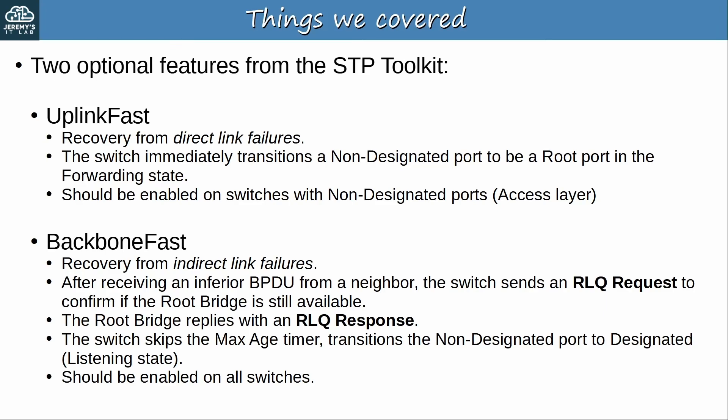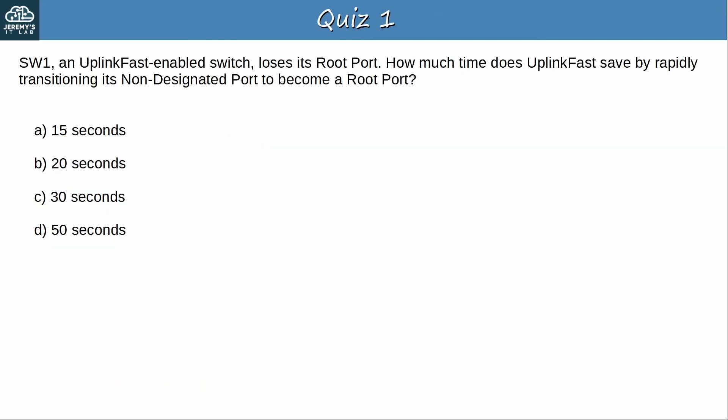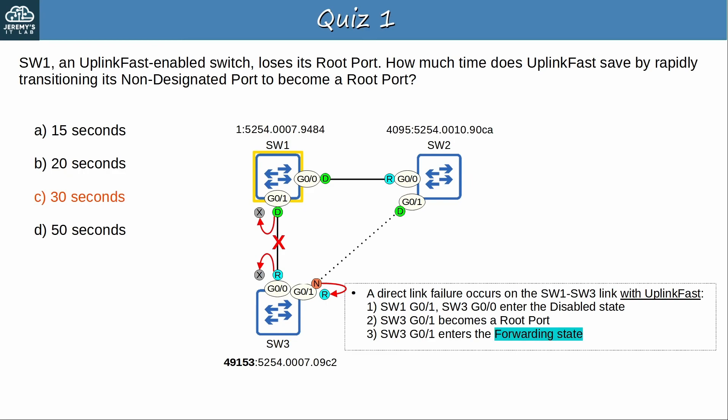Quiz question 1: Switch 1, an UplinkFast-enabled switch, loses its root port. How much time does UplinkFast save by rapidly transitioning its non-designated port to become a root port? The answer is C: 30 seconds. If the SW1–SW3 link fails, SW3 G0/1 immediately becomes a root port in the forwarding state — it skips the listening and learning states, therefore saving 30 seconds.